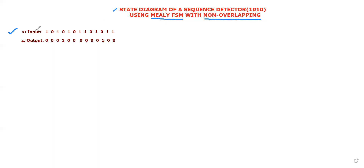Let us start the process with one example. This is the given input data. Starting from the left side, we can identify the first group. If we observe clearly, we can see a group of 1-0-1-0 again and frame out a group. When we use the non-overlapping condition, we can detect each set of four bits as a single group. In this first group, we have four bits: one-zero-one-zero complete.